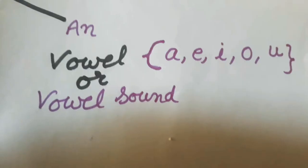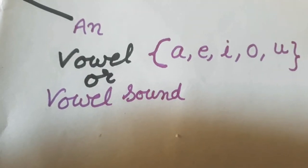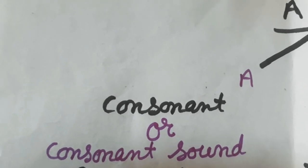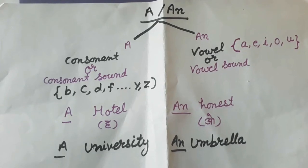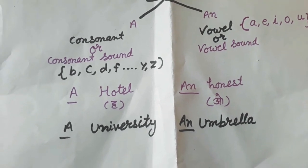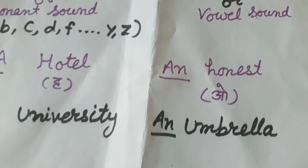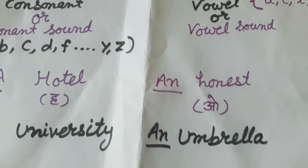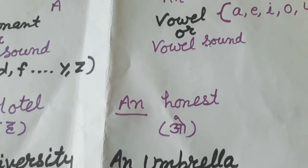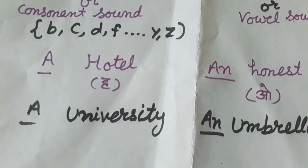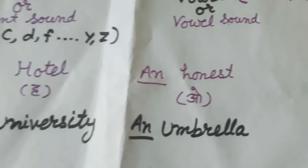Now let's discuss where we can use A and where we can use AN. We can use AN with vowel or vowel sound: A, E, I, O, U. We can use A with consonant or consonant sound. For example, hotel, honest, university, and umbrella. Before hotel we use A because the sound is 'ho', whereas before honest the sound is 'o', that's why we use AN. In the same way, we use A before university and AN before umbrella.